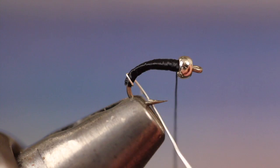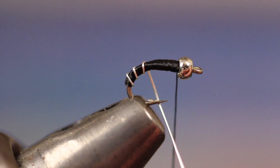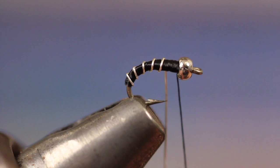Get hold of your ultrawire and begin making open spiral wraps up the shank, trying to keep those wraps as evenly spaced as possible. I doubt trout care, but evenly spaced wraps do make for a better looking fly.